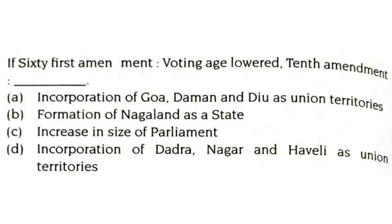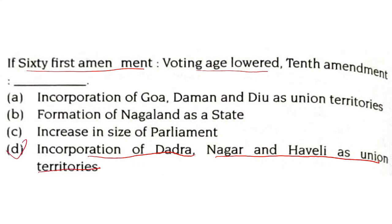If the 61st amendment is to voting, then the 10th amendment is to what? The 61st amendment lowered the voting age. The 10th amendment dealt with the incorporation of Dadar, Nagar, and Haveli as Union Territories. So the correct answer is the incorporation of Dadar, Nagar, and Haveli as Union Territories.